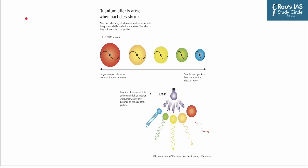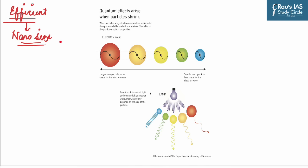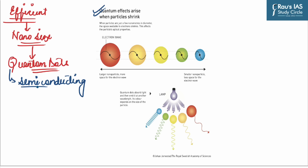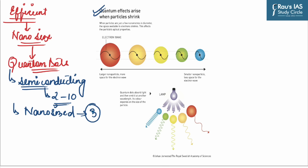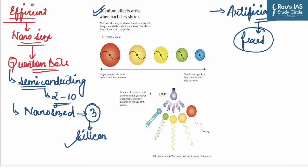Now let us look at the Nobel-winning research. The scientists successfully developed efficient methods to produce nano-sized particles that behave slightly differently from larger particles of the same element. These nanoparticles with special properties are called quantum dots. Quantum dots are tiny particles or nanocrystals of semiconducting material with a diameter in the range of 2 to 10 nanometers. They are nano-sized in all three dimensions and are made from a semiconductor such as silicon. They behave like artificial atoms, having a fixed number of electrons in a confined space, leading to unique size-dependent properties.